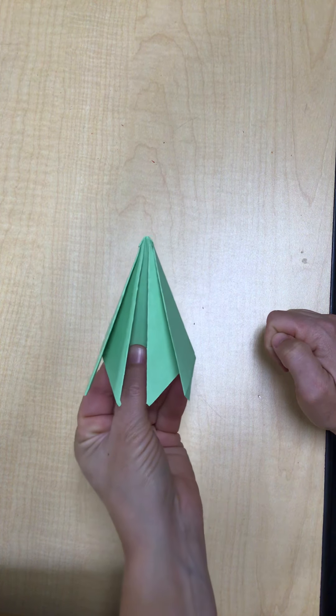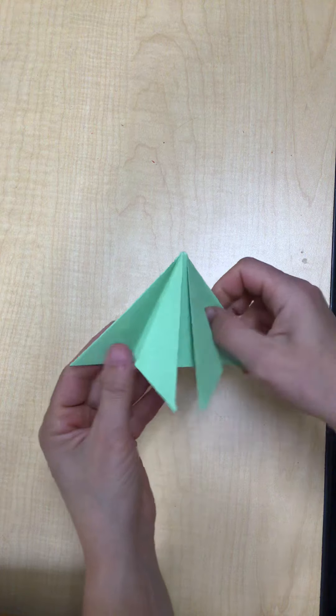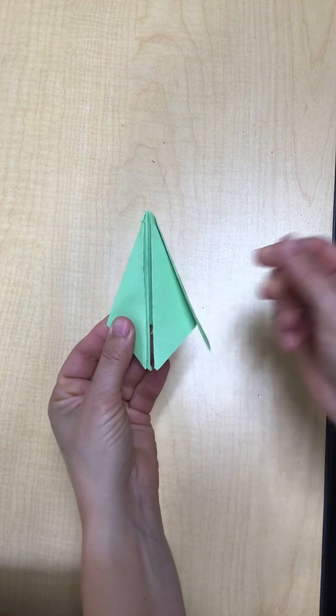So you can do fold four either way - flip that back triangle backwards, or wrap it around the front triangle. Alright. Good luck.